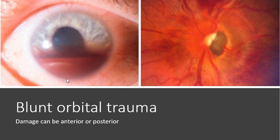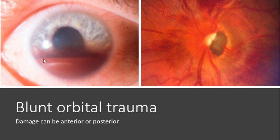We'll have a look at the image here on the left. This shows what's called a hyphaema — spelled H-Y-P-H-A-E-M-A. It's a very common complication of a blunt ocular injury. The source of the bleeding is usually at the iris root or at the ciliary body. Those structures bleed and you get this pooling of blood with a fluid level appearance in the anterior chamber.